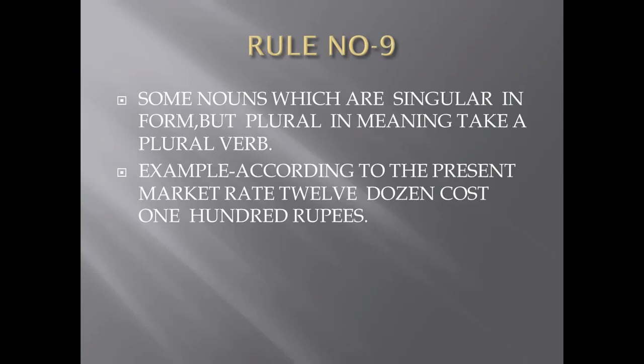Rule number nine says: some nouns which are singular in form but plural in meaning take a plural verb. There are certain subjects that look singular but are used as plural in English, so we use a plural verb with them. Example: 'Twelve dozen cost 100 rupees.' The plural verb 'cost' is used.